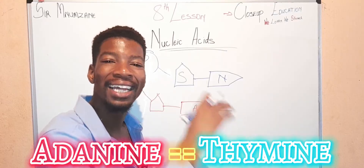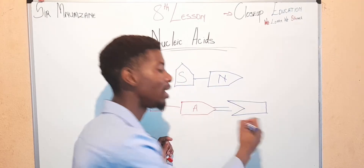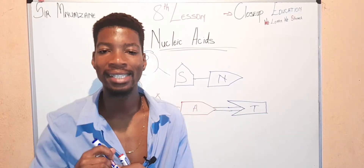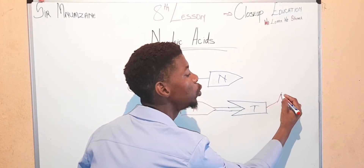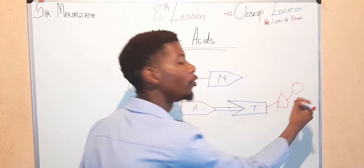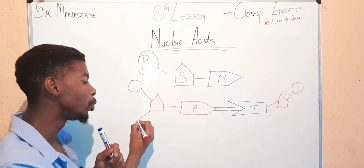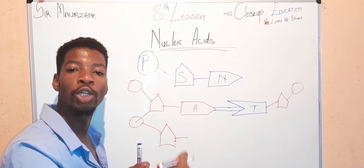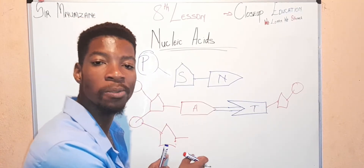Adenine pairs with what we call thymine inside a DNA. The thymine structure looks like this — it is pairing with the thymine structure. The other side also consists of the deoxyribose sugar and the phosphate group. Then we come back to this side and continue with our phosphate group and deoxyribose sugar.